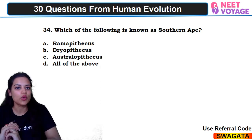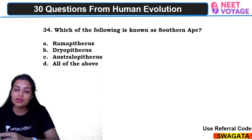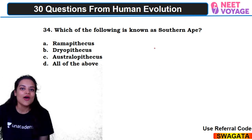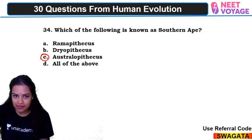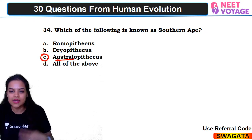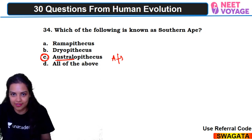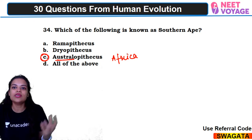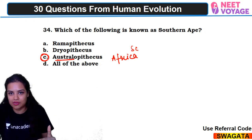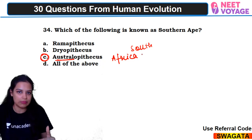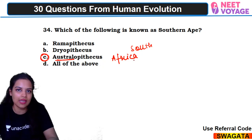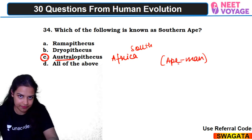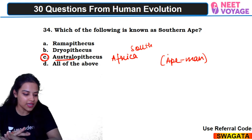Bonus question 34: which of the following is known as the southern ape? Southern ape is nothing but Australopithecus — most of them were found in South Africa, which is why they are called the southern ape. Australopithecus is also called ape man. So the right answer would be Australopithecus — option 3.